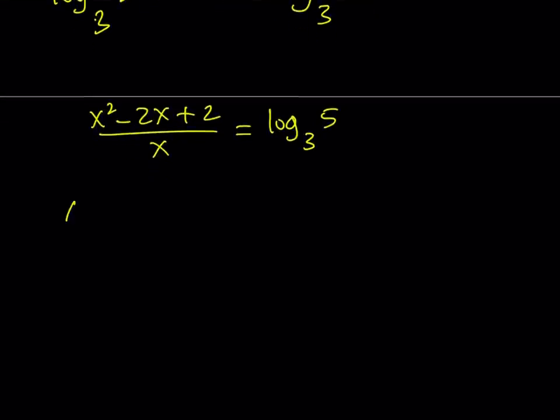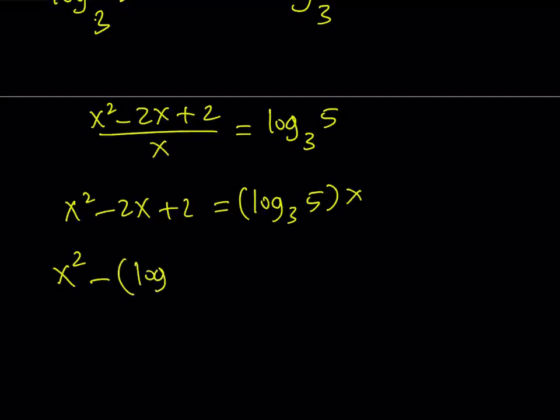Let's go ahead and cross multiply. And then let's put everything on the same side and put it together. So the coefficient of x is going to be this 1. And now we do get a quadratic equation.